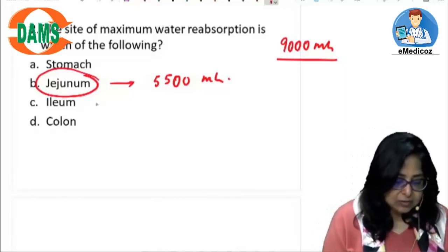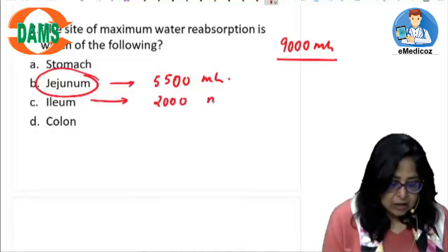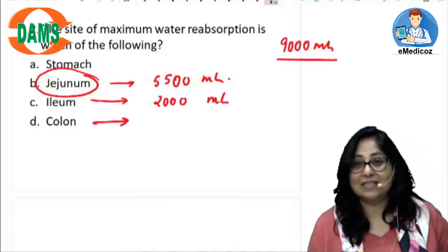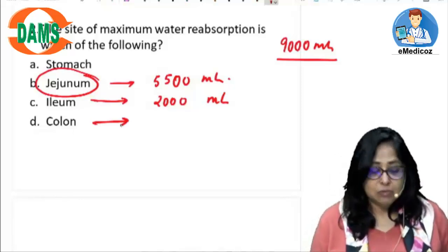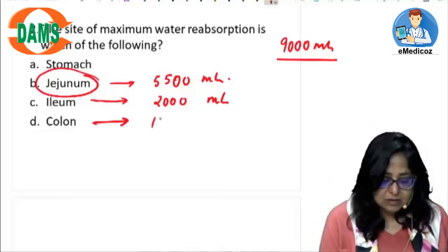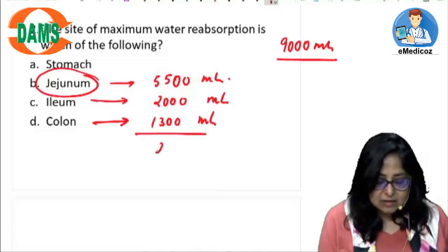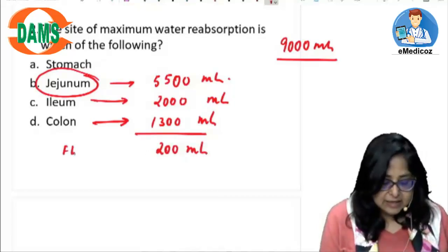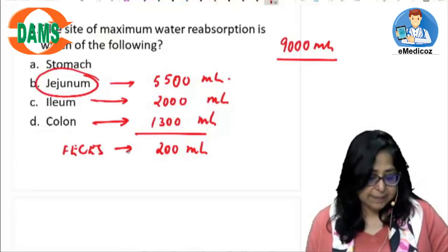Another 2,000 ml is absorbed in the ileum. We normally tend to think the colon is the site of maximum water absorption, but no — it is the jejunum. The colon absorbs about 1,300 ml of water, and the remaining 200 ml is excreted in the feces. So the site of maximum water absorption is the jejunum.